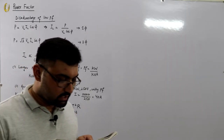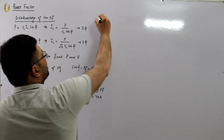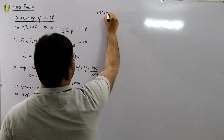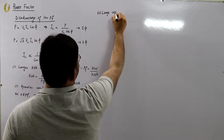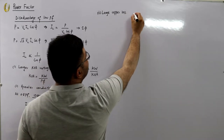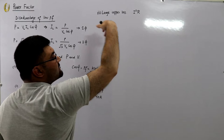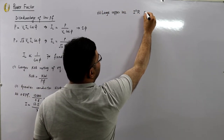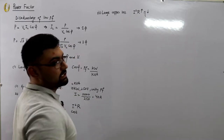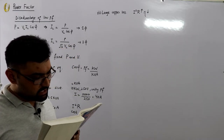The third disadvantage is large copper loss. Due to the higher current drawn at low power factor, the I²R power loss increases, which results in poor efficiency of the system.